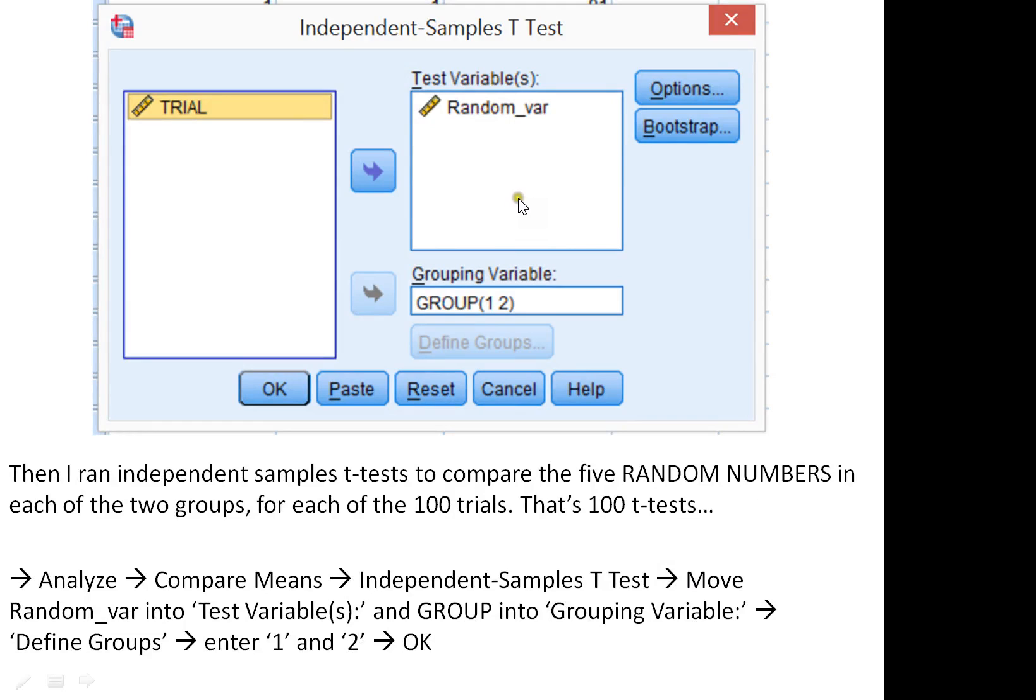We run an independent samples t-test. Analyze, Compare Means, Independent Samples t-test, which brings up this box here. We move random var, our test variable, into the test variables box. We select group as our grouping variable, and the moment you do that, this box here, Define Groups, goes black and allows you to click on it, where you can then enter groups one and two. These are the two groups we're going to compare on our random var.